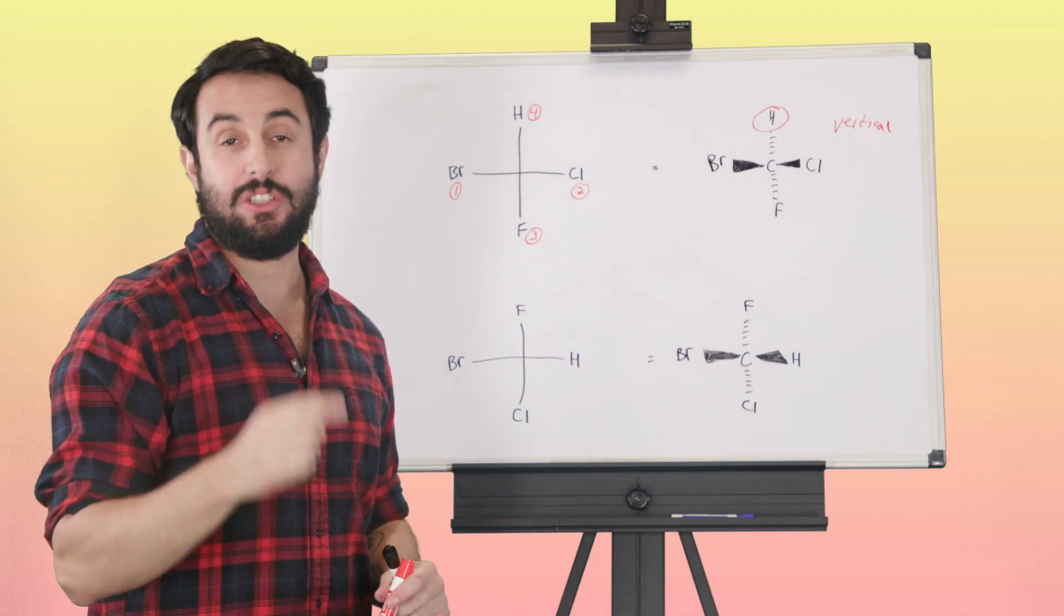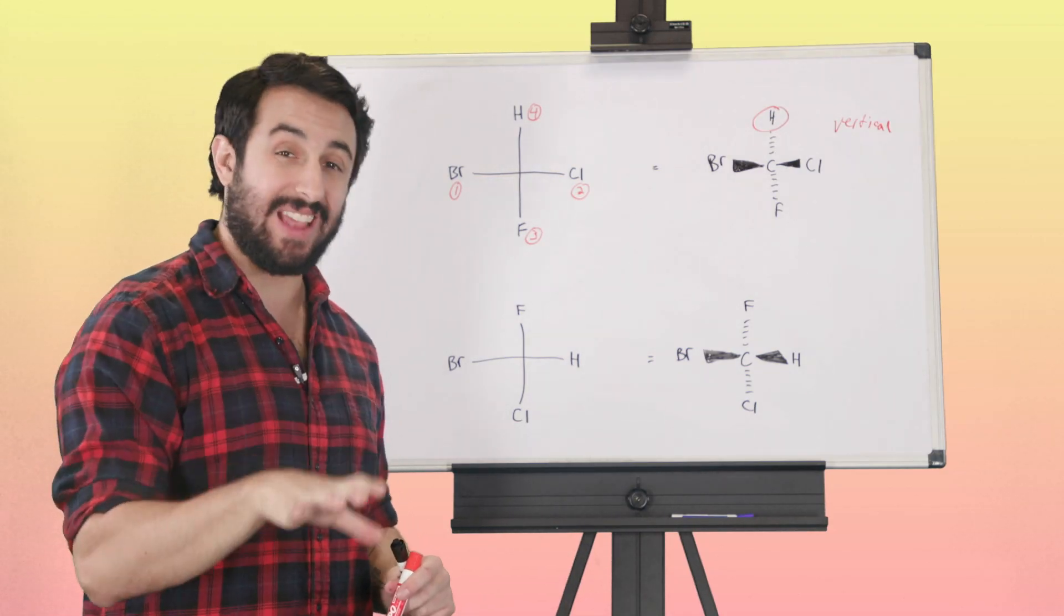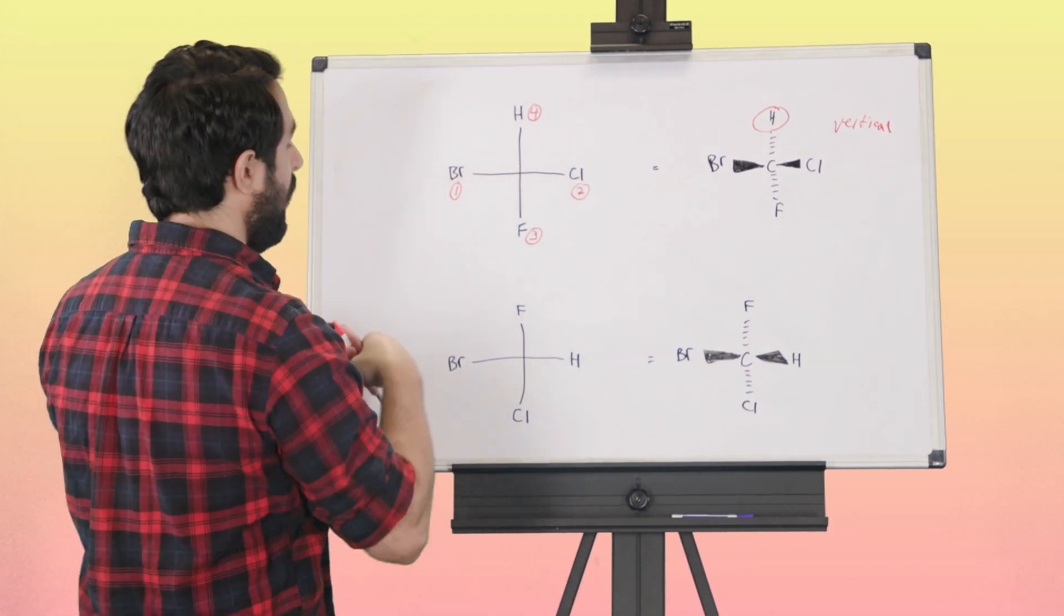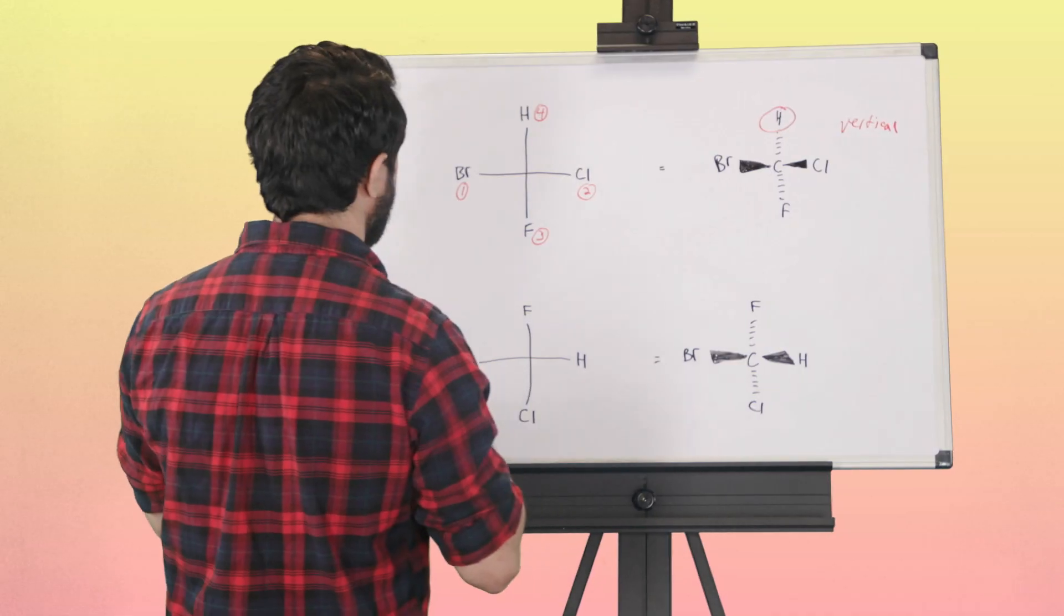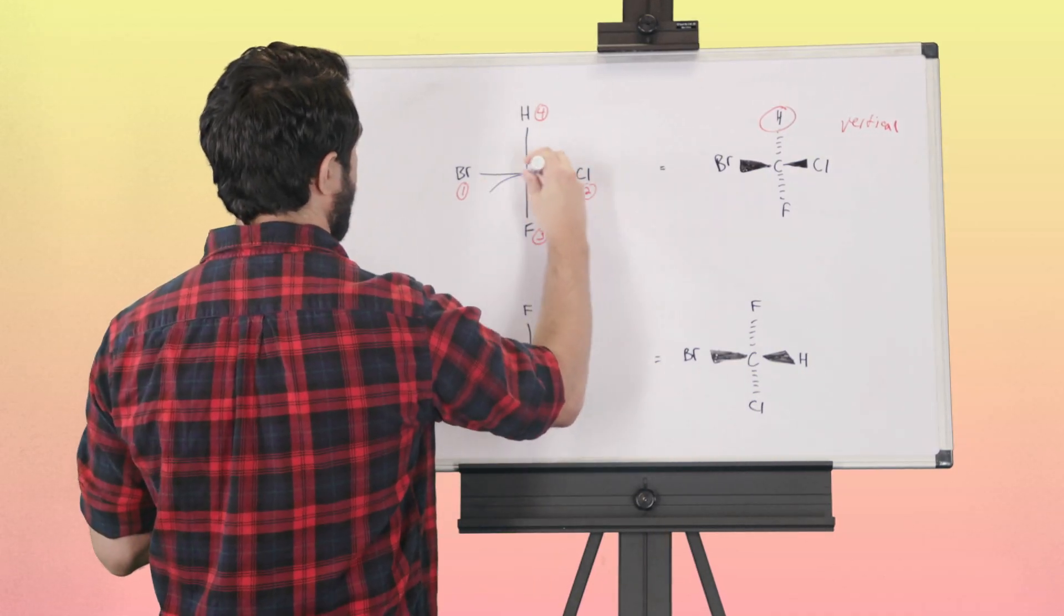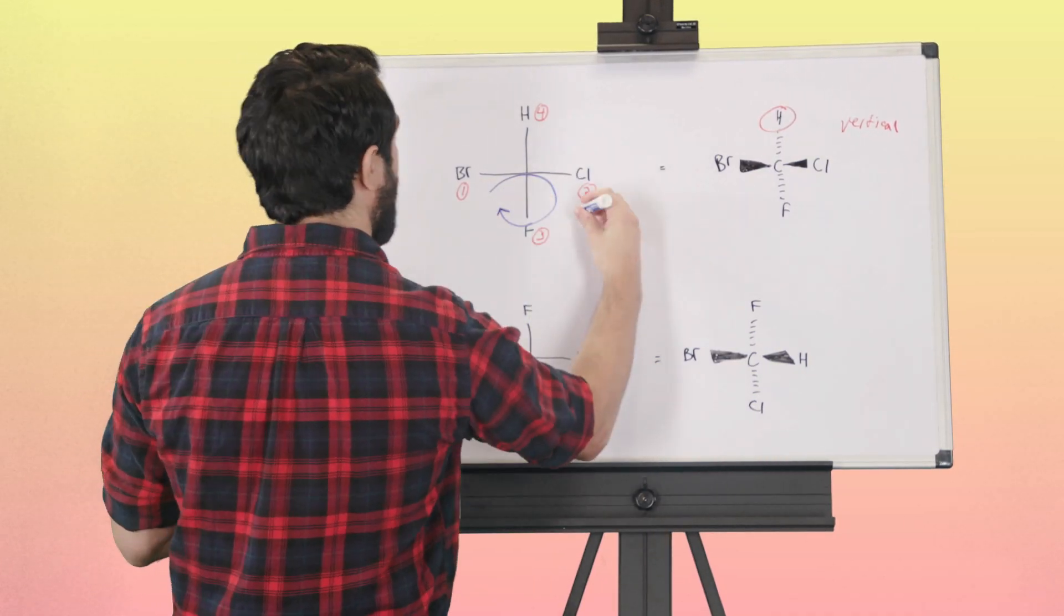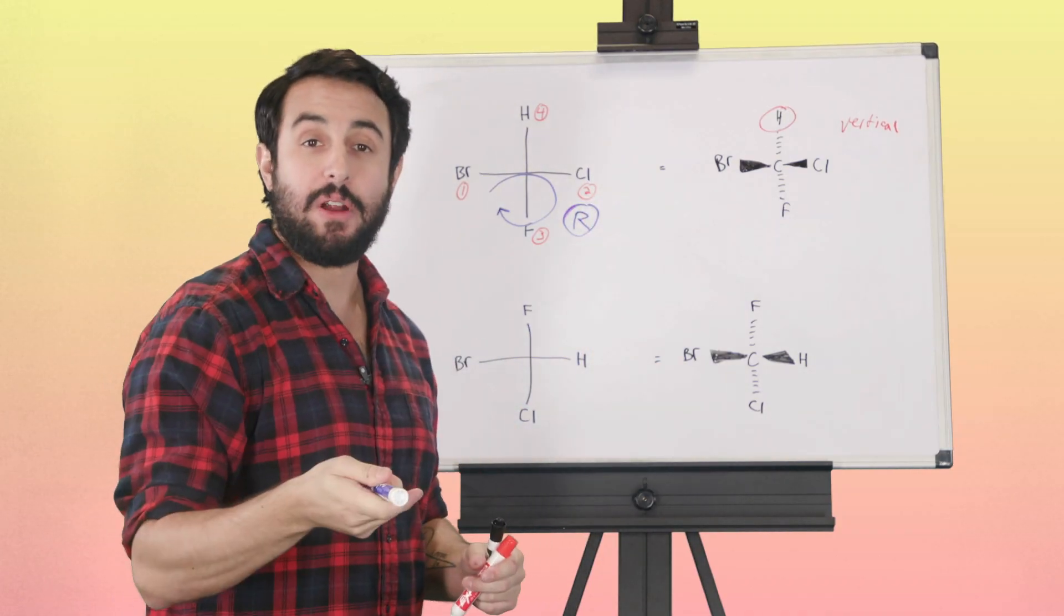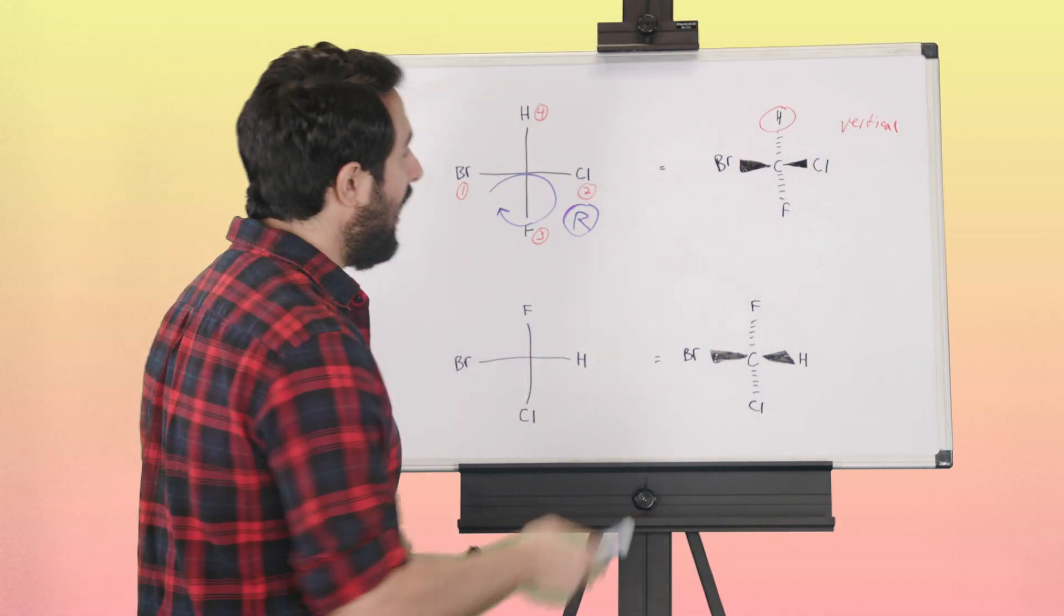Here, if we go from one to two to three, we're going to go like this—that's clockwise, so this is R, because the lowest priority group was already away from us.